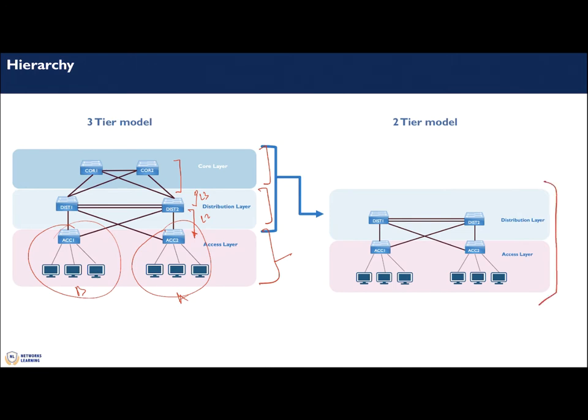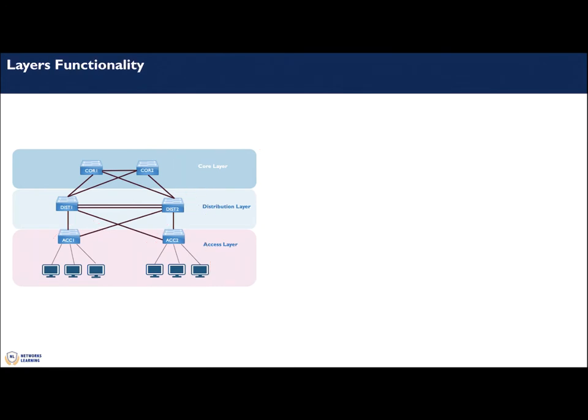You also have designs where the core and distribution are collapsed, resulting in a two-tier model — a collapsed core design. When to use three-tier versus two-tier pretty much depends on the size of your distribution layout. We will look at one of the reasons why it is recommended to use a three-tier model.